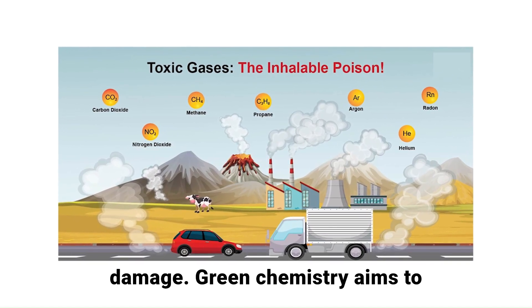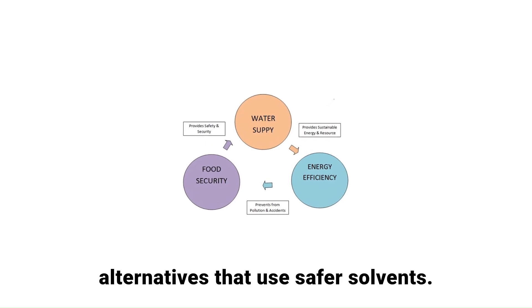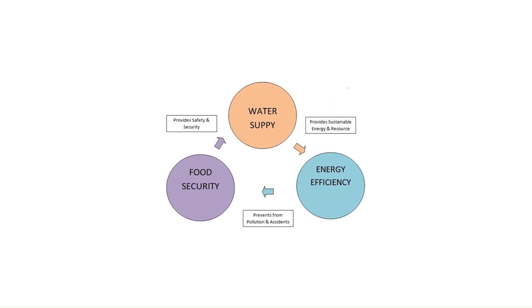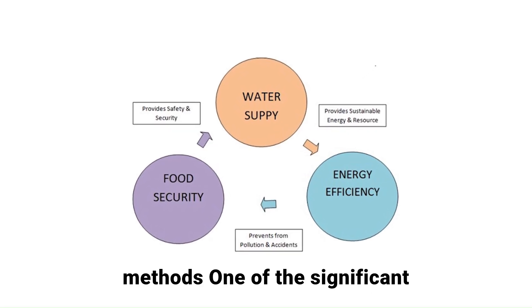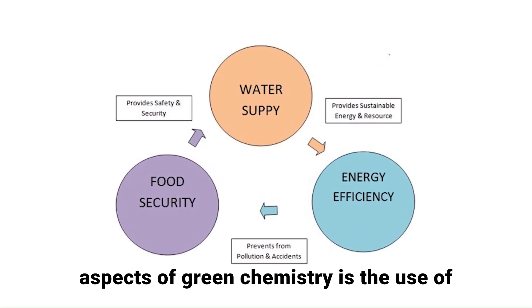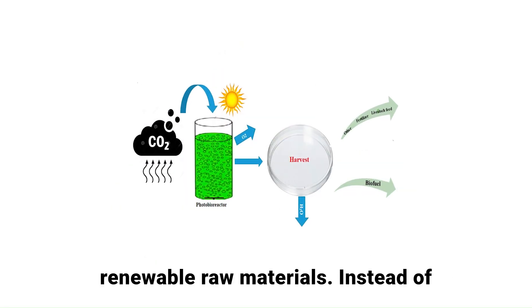Green chemistry aims to replace such processes with sustainable alternatives that use safer solvents, renewable feedstocks and energy-efficient methods. One of the significant aspects of green chemistry is the use of renewable raw materials.